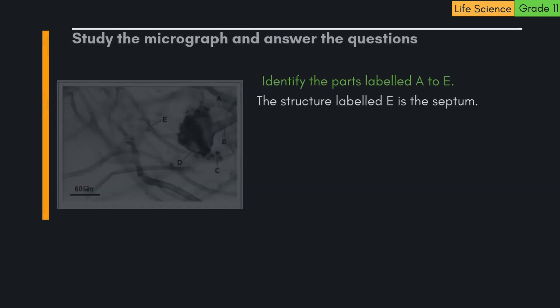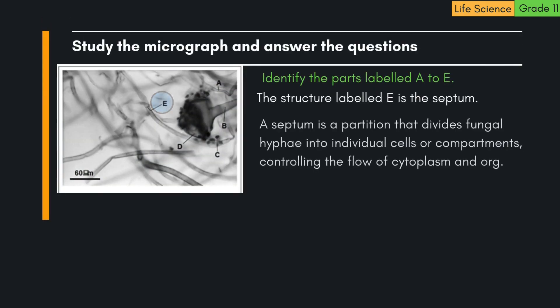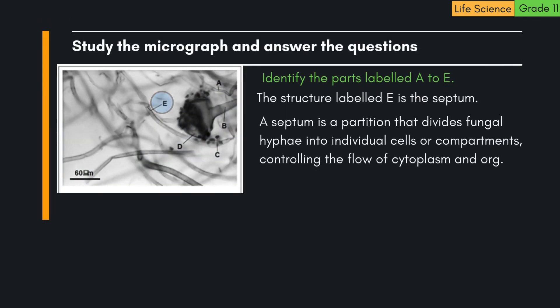5. The structure labelled E is the septum. A septum is a partition that divides fungal hyphae into individual cells or compartments, controlling the flow of cytoplasm and organelles.